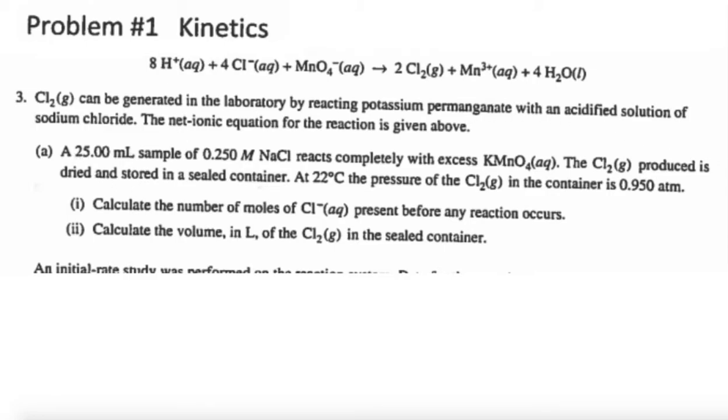A 25 mL sample of 0.250 molar NaCl reacts completely with excess permanganate. The chlorine produced is dried and stored in a sealed container at 22 degrees Celsius and the pressure of the container is 0.950 atmospheres. They're telling you dried because they don't want you to have to worry about having to use Dalton's law that if it was over water we might have had another gas in there. Calculate the number of moles of Cl- present before any reaction occurs.